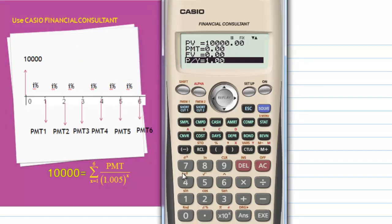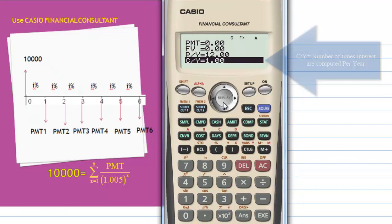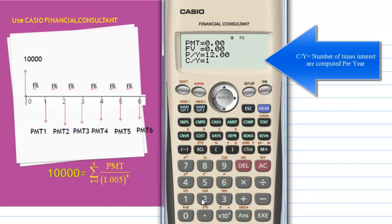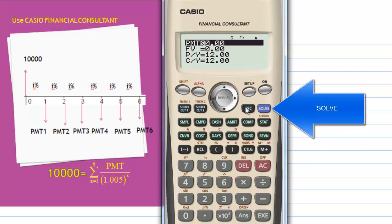Number of payments per year is 12. Number of times the interest is compounded is also 12, since the interest is compounded at the beginning of each month. Now move the cursor back to PMT, monthly payment, and then press solve.